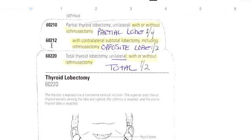Now 60212 says with the contralateral, which means opposite side, subtotal lobectomy including the isthmus. So think of that as half the butterfly. It's not one whole lobe. It could be the upper of the right and the lower of the left or the upper of the right and the upper of the left. But basically half the butterfly is being removed.